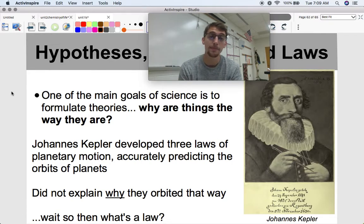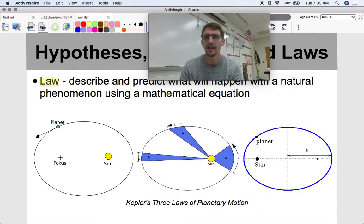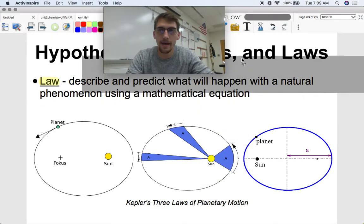This dude named Johannes Kepler developed three laws of planetary motion during his life while accurately predicting the orbits of planets. He could figure out, oh, Mars is going to be here, Jupiter is going to be here, it's moving at this part of the sky, and it's going to be there on this particular date, but he could never explain why they orbited that way. He never explained accurately why the planets orbited the sun in the way they did, or why they appeared in the sky the way that they did. He could predict when they were, but he couldn't explain them. So what he developed are three laws of planetary motion. Laws describe and predict what will happen with a natural phenomenon using a mathematical equation.